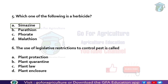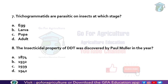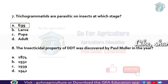This is also called the legislative method, and plant quarantine plays the main role in it. Next: Trichogramma species are parasitic on insects at which stage? Trichogramma are egg parasitoids — they are bio-agents used in biological control. Other bio-agents include larval and pupal parasitoids, and predators like ladybird beetle and ground beetle.